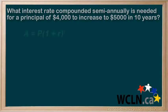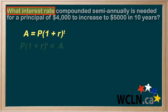Let's begin with our compound interest formula: A equals P times (1 plus r) to the t. In this case, we're solving for the interest rate, so let's isolate the r.